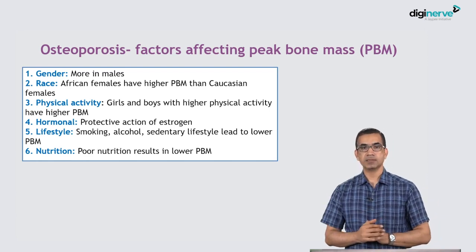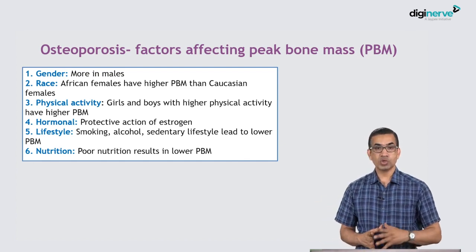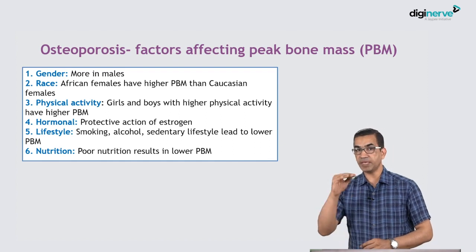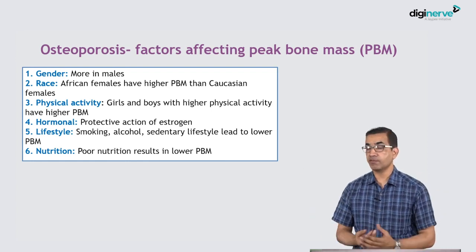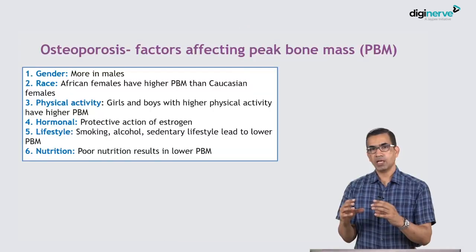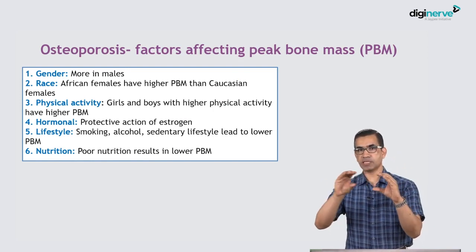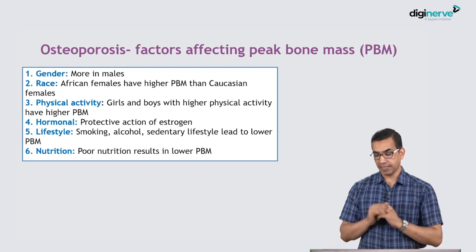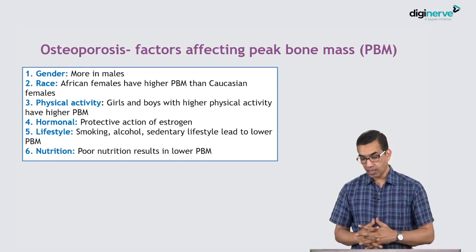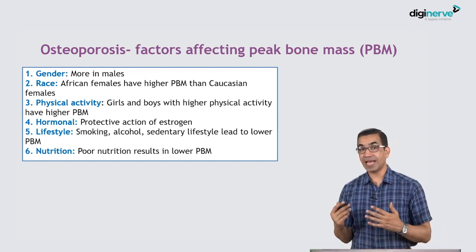What decides the likelihood of higher peak bone mass? Age 30 is considered the peak bone mass age — after that there is stabilization for a couple of years and then gradual decline, more so in women than in men. African females have higher peak bone mass than Caucasian females. Physical activity: the more active you are, the more peak bone mass you may have. Hormones: the protective action of estrogen contributes to good peak bone mass levels.